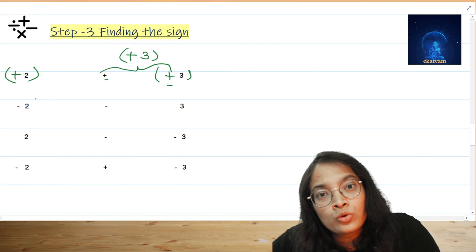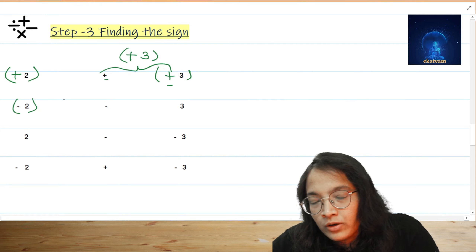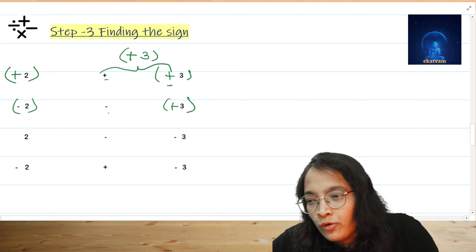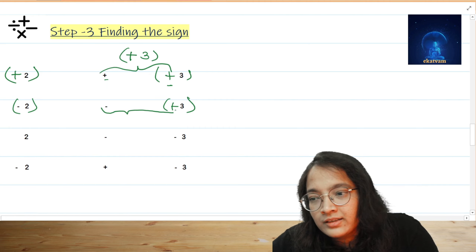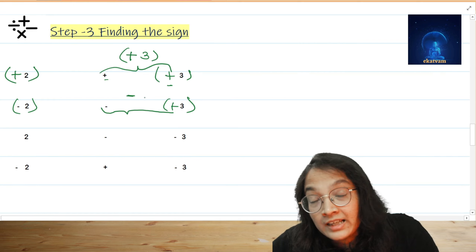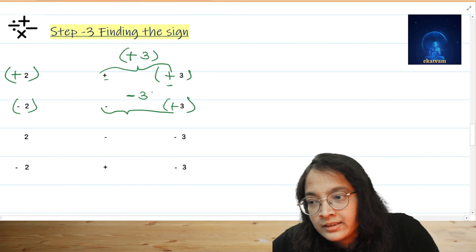Moving to the next sum: after the second step we have minus 2 minus, and this would be plus 3. You can see these are two different signs — one is minus and one is plus. So the final sign would be minus, as there are two different signs. You place the minus sign and carry the number as it is, giving minus 3.